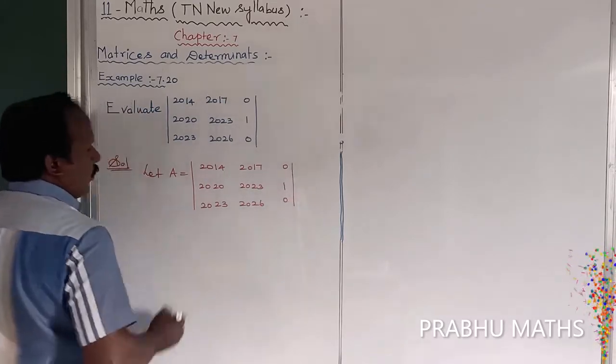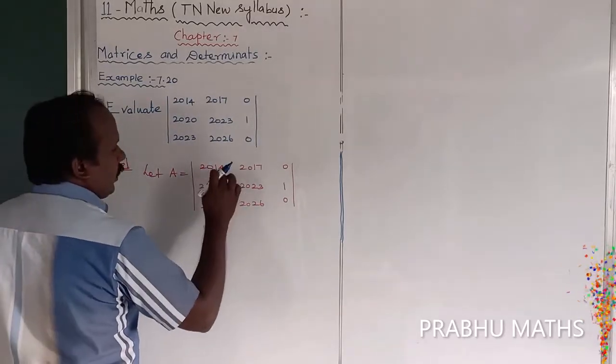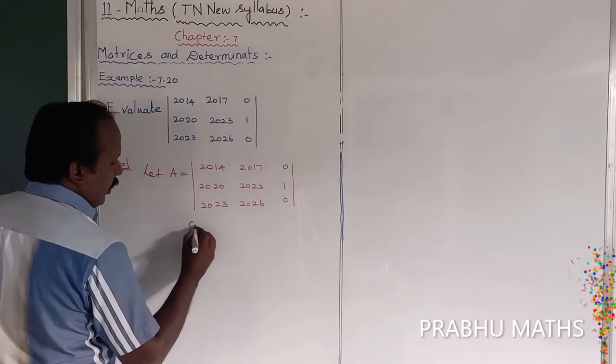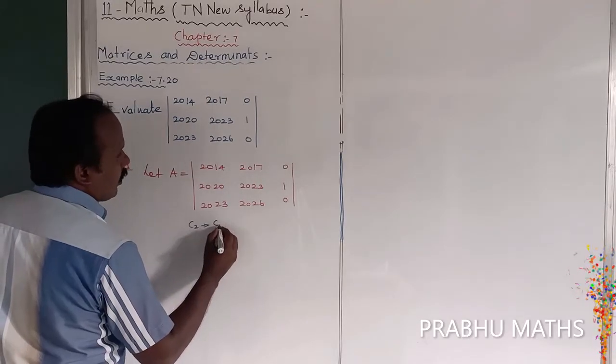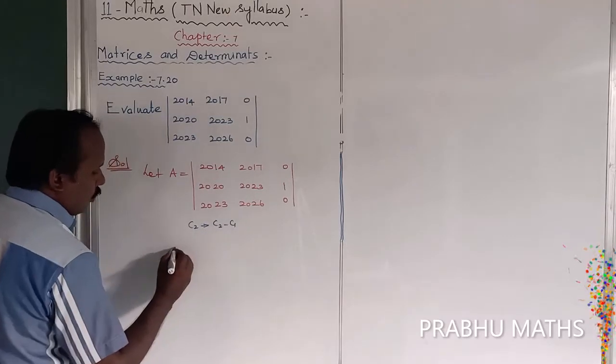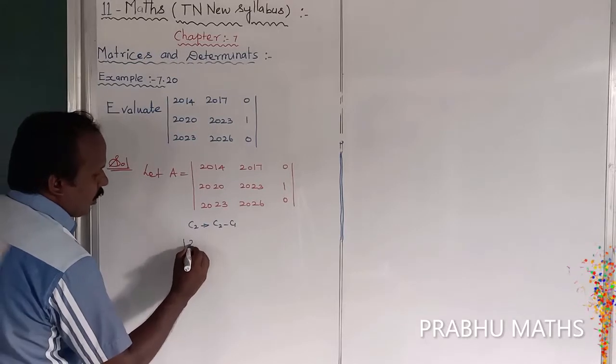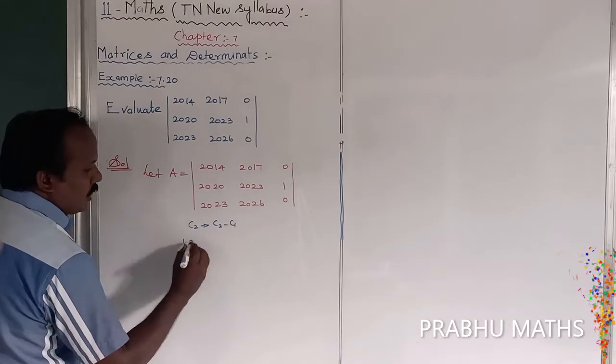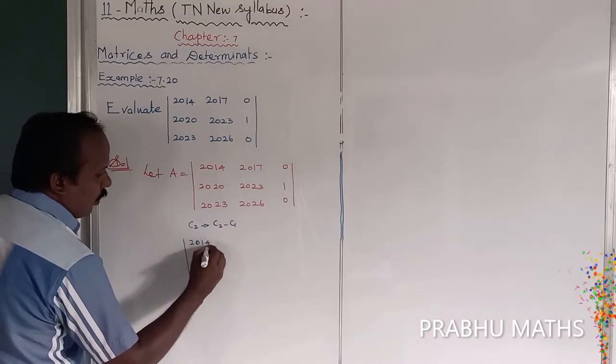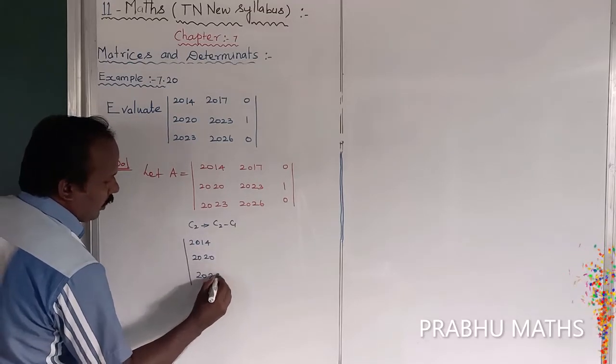So first, by using the property, that is C2 tends to C2 minus C1. So determinant of, the first one there is no changes, C1 there is no changes. So 2014, 2020, 2023, okay.